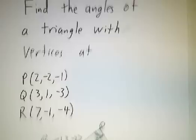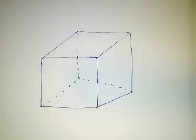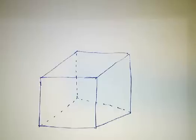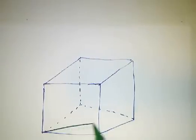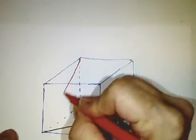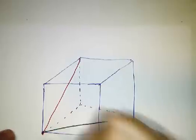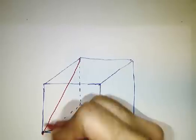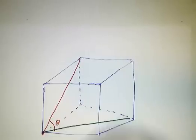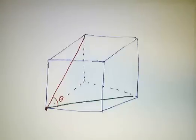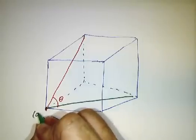For our second problem, we're going to look at the diagonals of a cube. So let's suppose we have a cube, and we look at the diagonal of one of its faces. And we look at the diagonal of another face, where these two diagonals meet at this point. And the question is, what is the angle between those two diagonals? To do that, we have to give coordinates to our points. So let's call this point the origin.